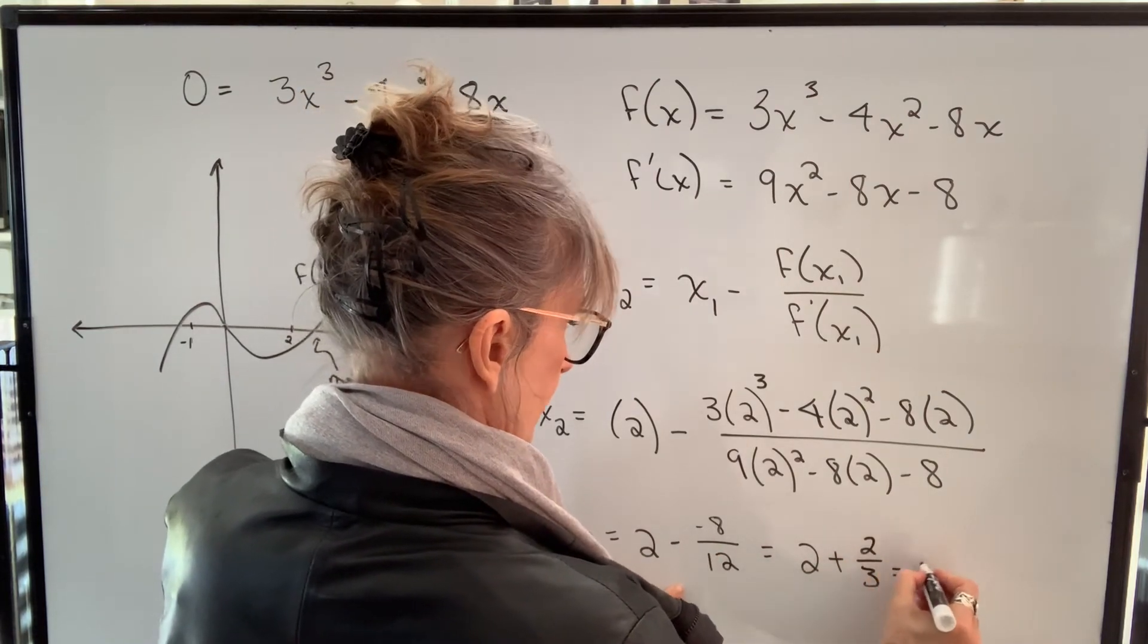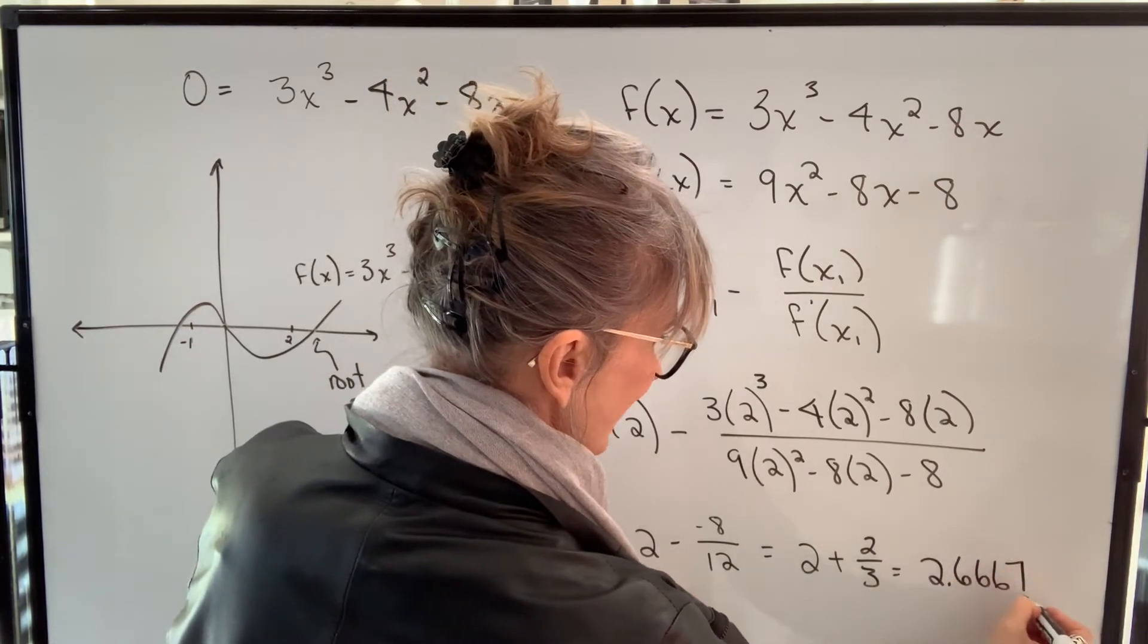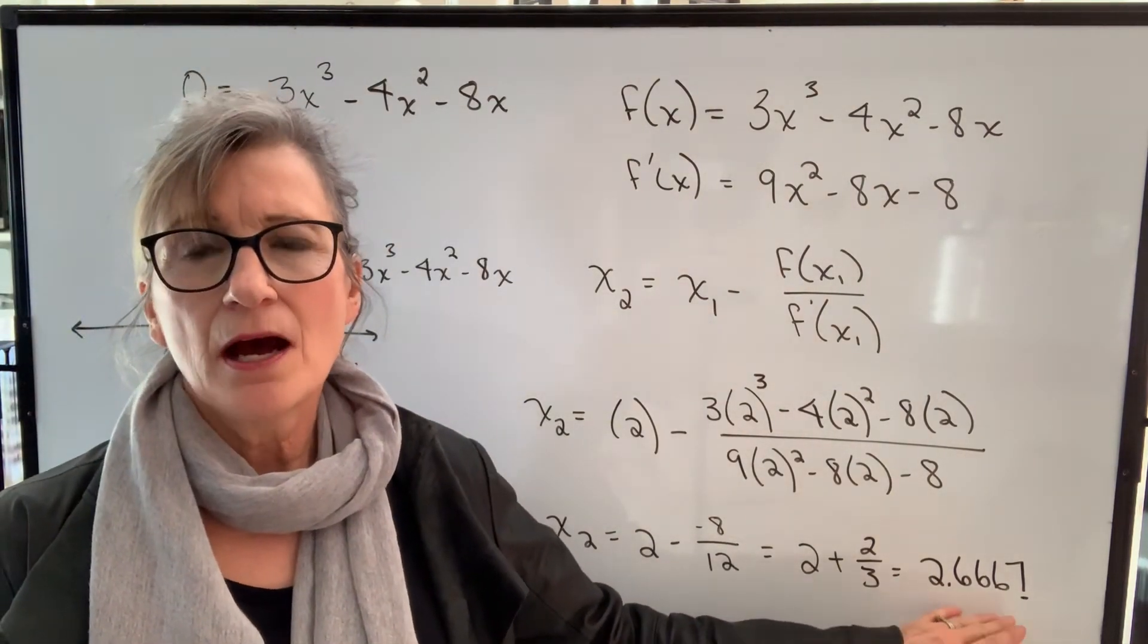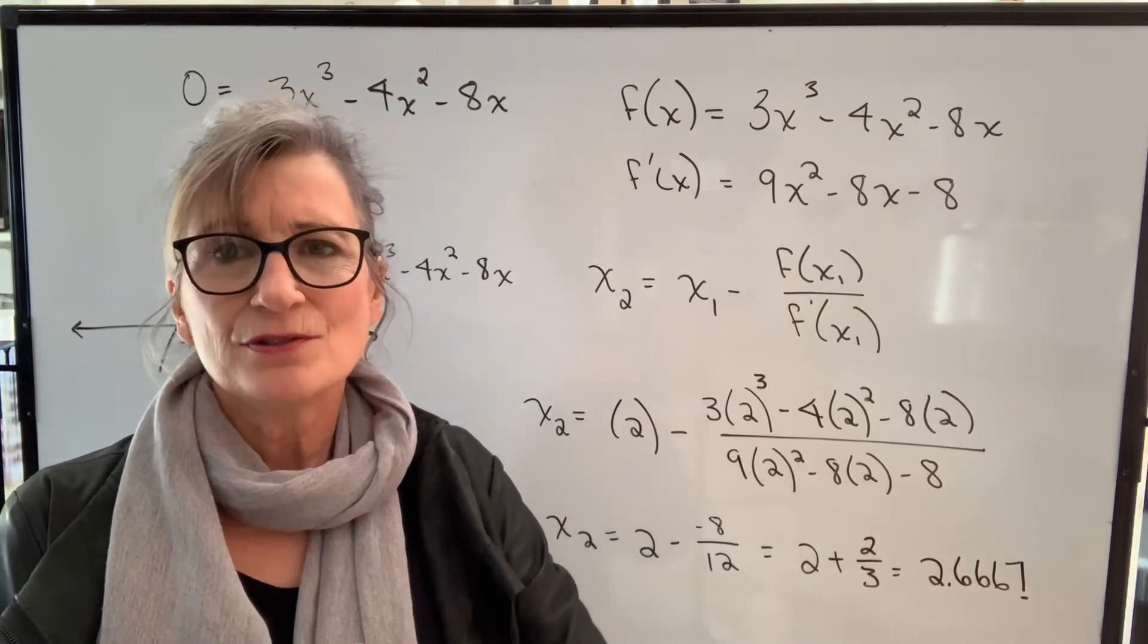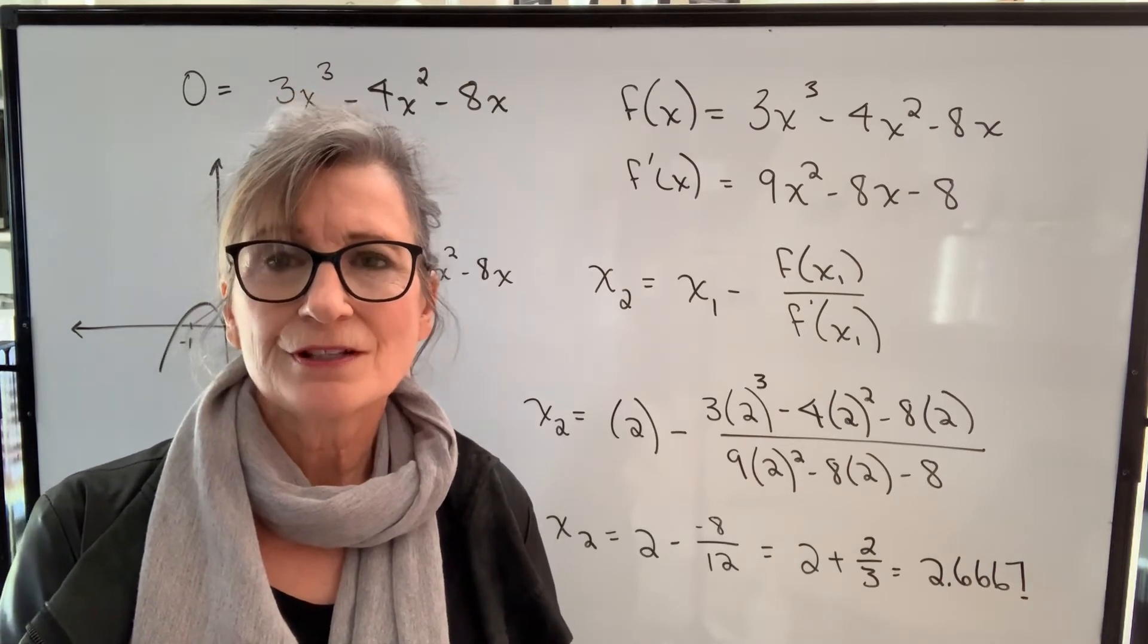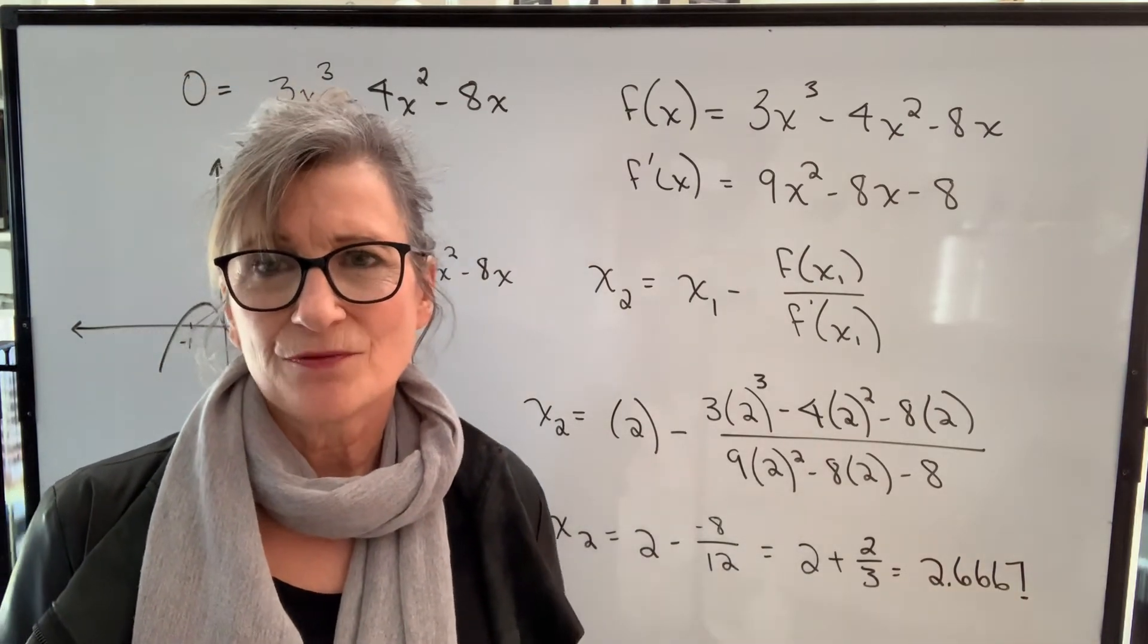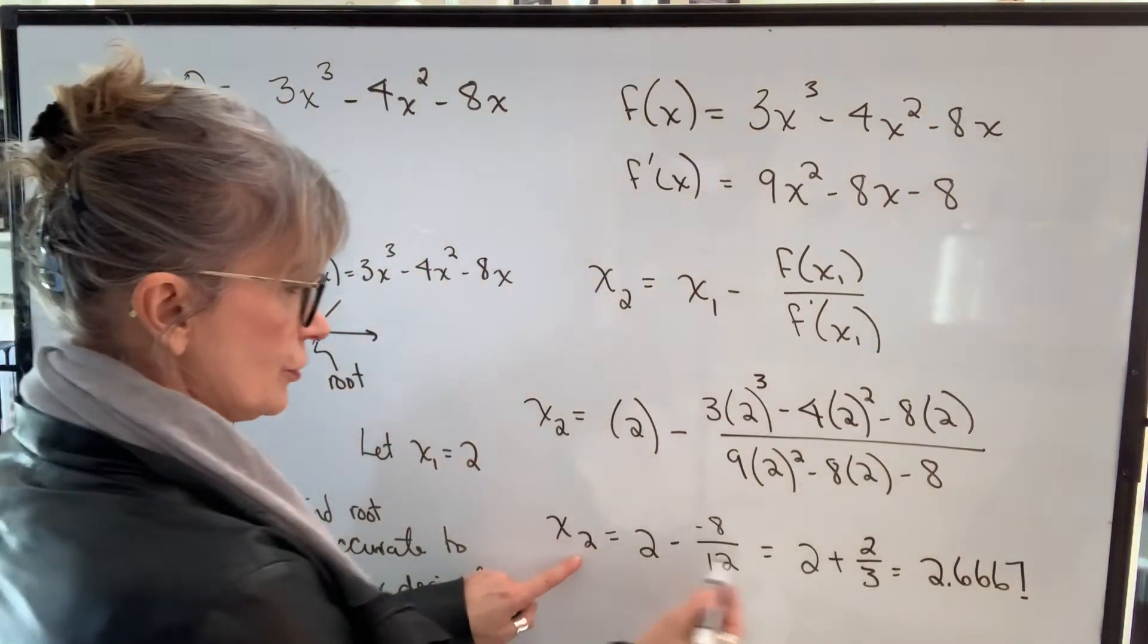I'm going to write it down as 2.667. But when I use this value to do the calculations again, I'm not going to use the rounded off value that I wrote down. I'm going to use the value that's on my calculator. So you will need to know how to store numbers on your calculator so that you can use the exact value. If you don't want to be using rounded off, it defeats the purpose of this numerical method, you're introducing error. So that's x2.